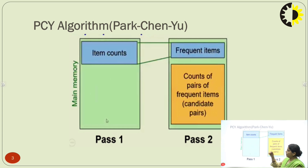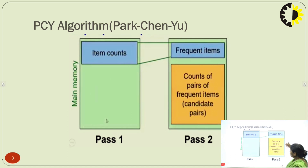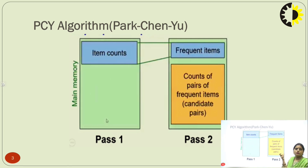In pass 1, the main memory holds item counts for all items in the market basket data analysis. In pass 2, we fetch the frequent items from those item counts, and then count pairs of frequent items — the count of pairs of frequent items is also known as candidate pairs.